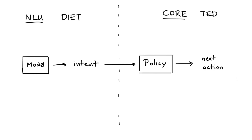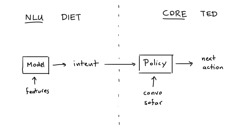I'm glossing over a couple of details here — the machine learning model will get a lot of features that are generated as well, and I'm not explicitly mentioning those. And if we are using TED as a policy mechanism, we also typically include the conversation so far. But from this vantage point, I hope you might agree that there are actually not one but two places where we can say we are uncertain about a prediction — there might be uncertainty in both the NLU and core parts.